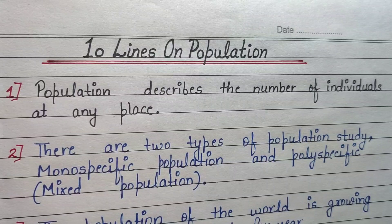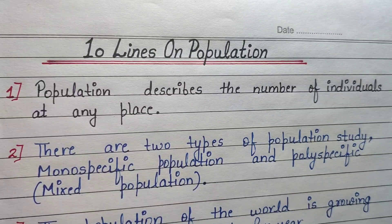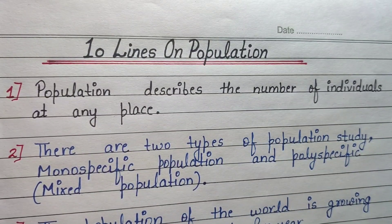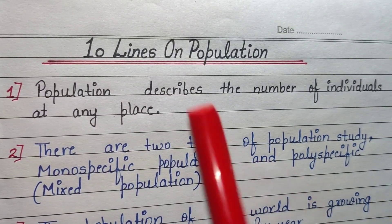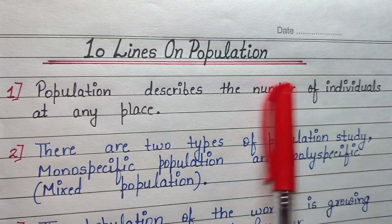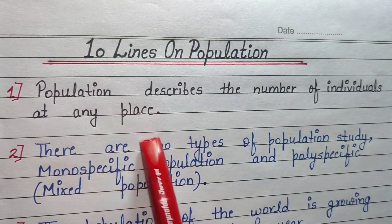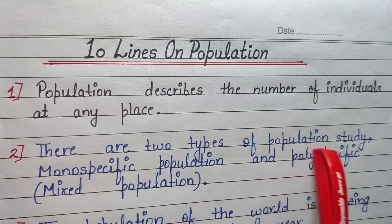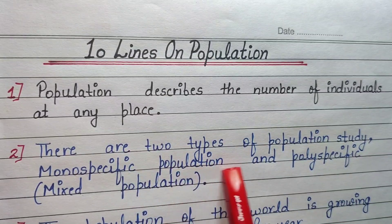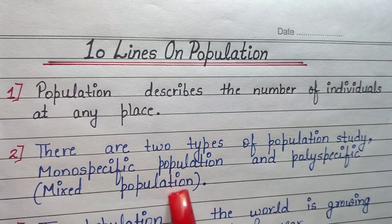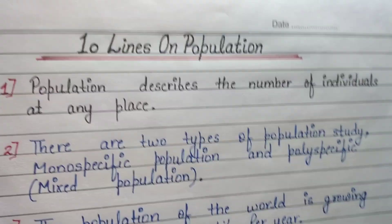Welcome back to my YouTube channel. Today we are going to discuss timelines on population. Population describes the number of individuals at any place. There are two types of population study: mono-specific population and fully specific mixed population.